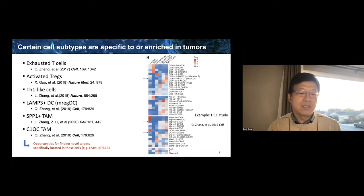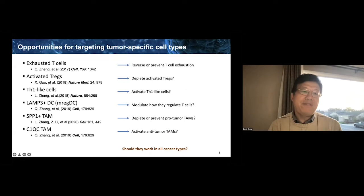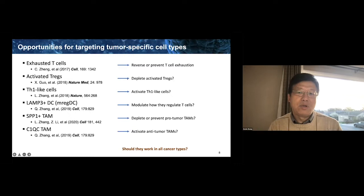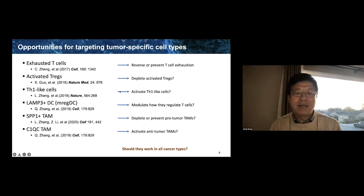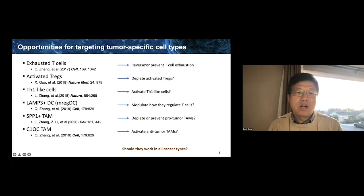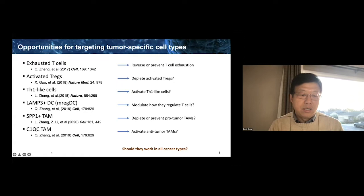These provide opportunities to find specific genes in those cell types to determine which can perturb them. For exhausted T-cells, we can try to reverse or prevent T-cell exhaustion. For activated T-regs, which provide a suppressive role in the TME, we can try to deplete them. We can also try to activate more beneficial cell types like TH1-like cells, or modulate LEM3-DC or MREG-DC. Some strategies targeting these cell types have been very successful clinically, and some others are in trials. We want to ask whether all cancer types would benefit in the same fashion.